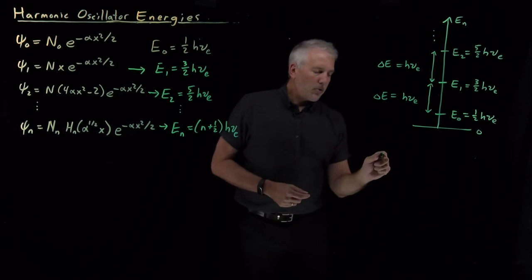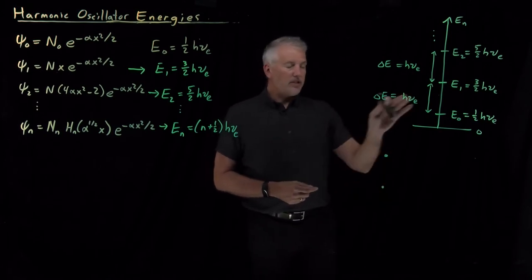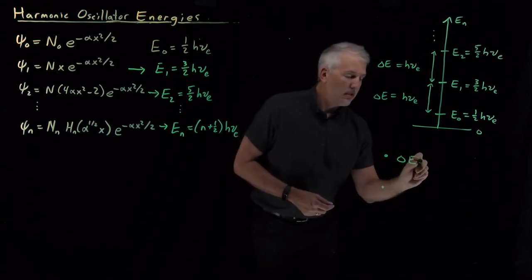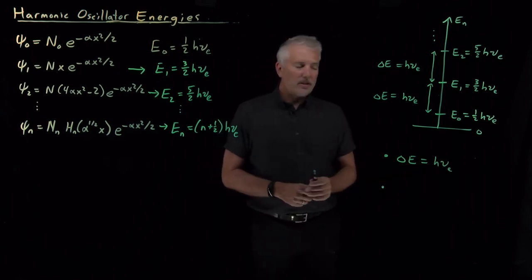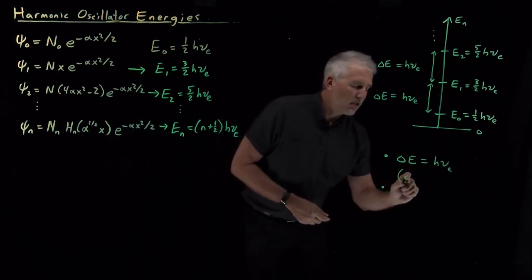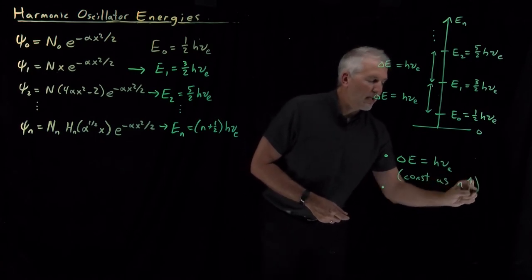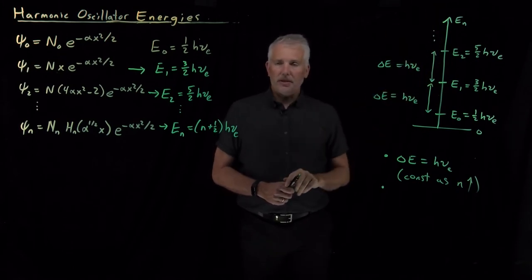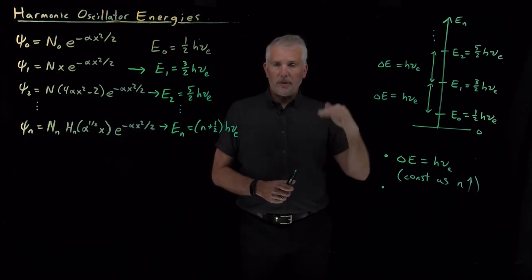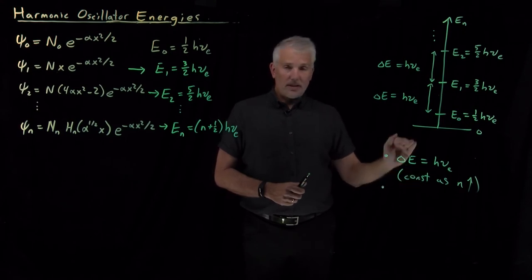So there's two very important features of the harmonic oscillator energies that we've just written down. First of all, delta E is h nu between every pair of successive states. In other words, as I climb the ladder, the gap between states remains exactly the same. That's different than it was for the particle in a box or for the rigid rotor, where that spacing changed as I climbed the energy ladder. So here, the energy gaps remain constant as I climb the ladder.